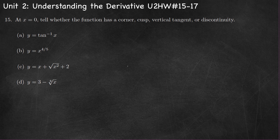Number 15 says that at x equals 0, tell whether the function has a corner, cusp, vertical tangent, or discontinuity. Since we haven't learned an easy way to find these derivatives, we're going to do this by looking at the graphs.